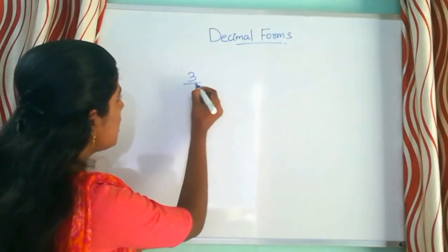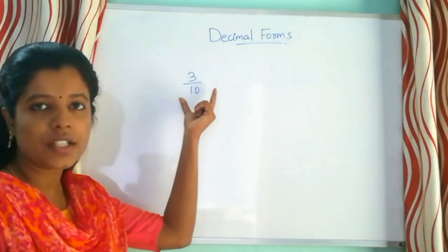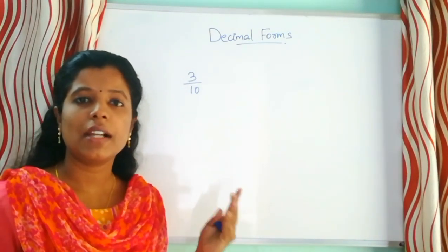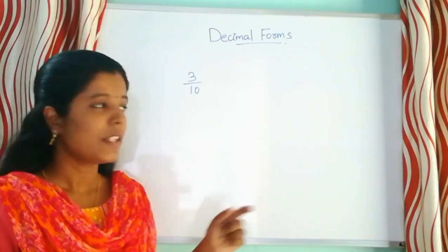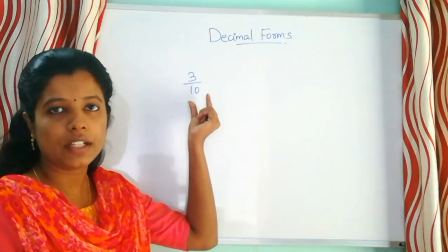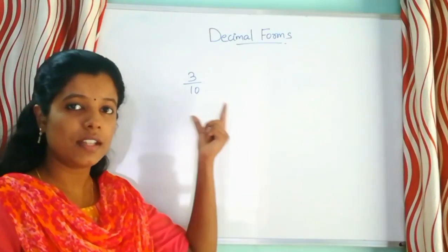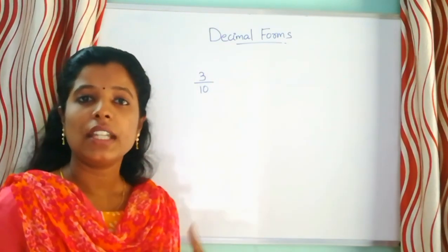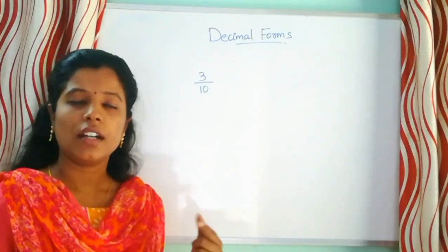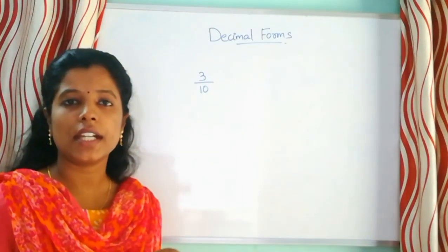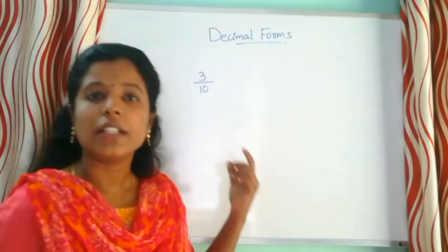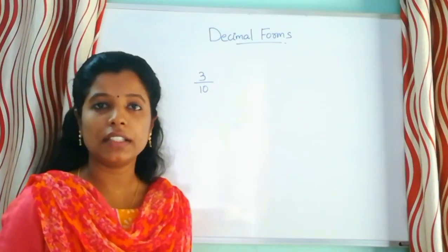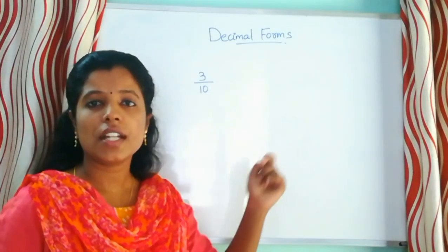3 by 10 is the number — this is the fraction. Our decimal form comes from the fraction. Our fraction has a denominator, and we will learn about the denominator. That's why we have a fraction of the fraction.